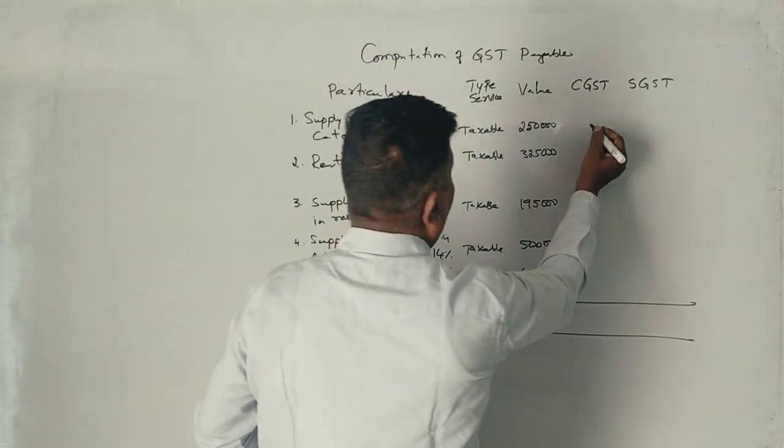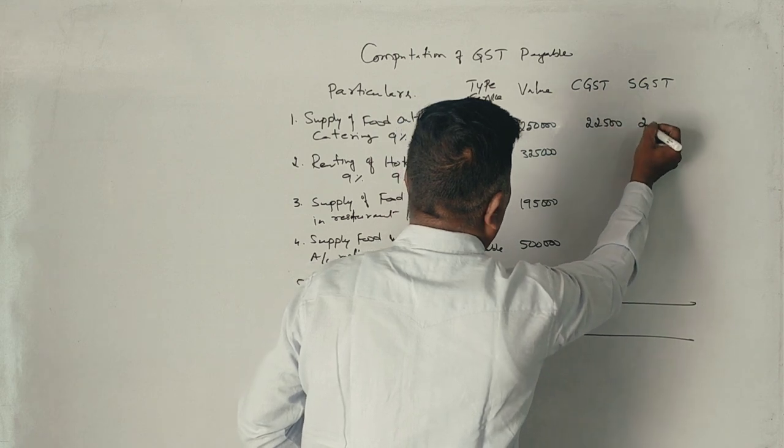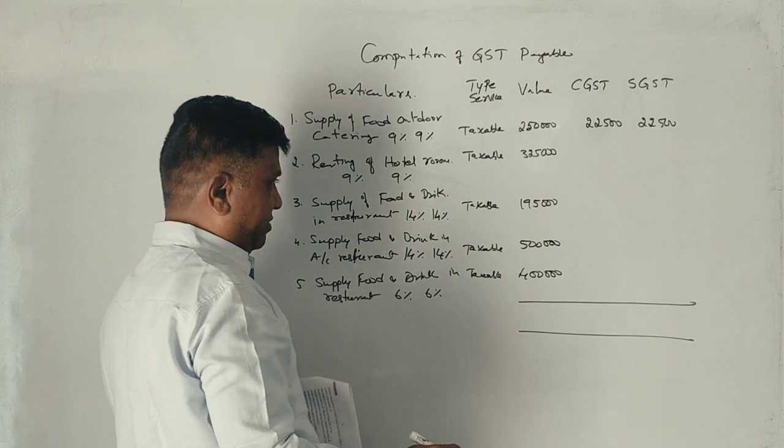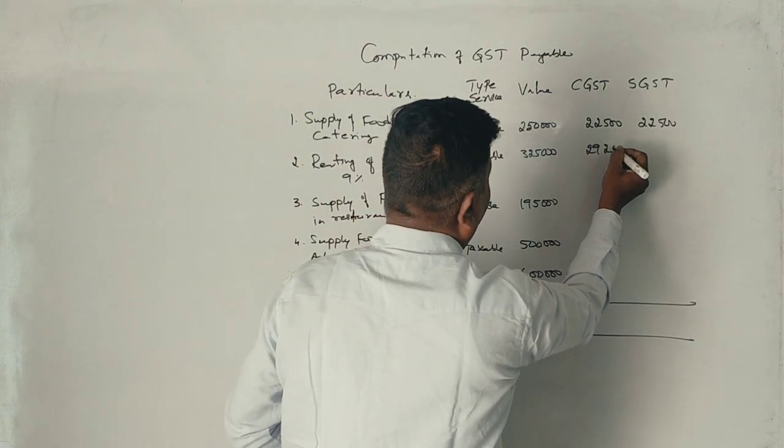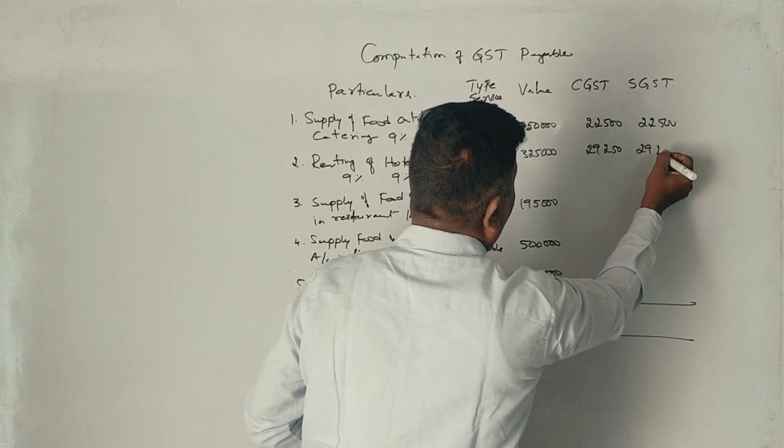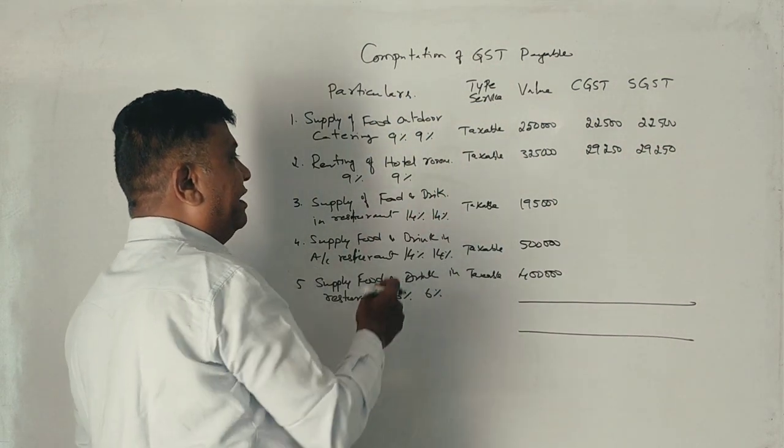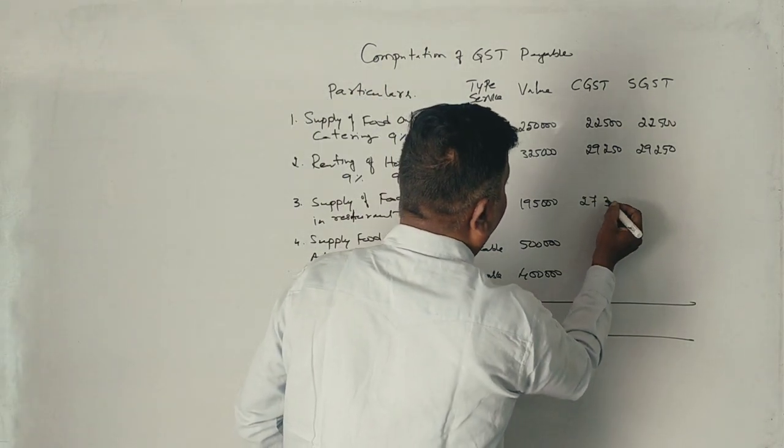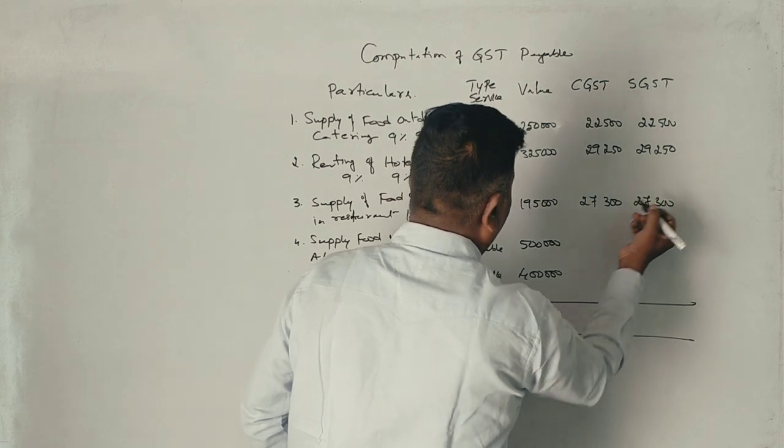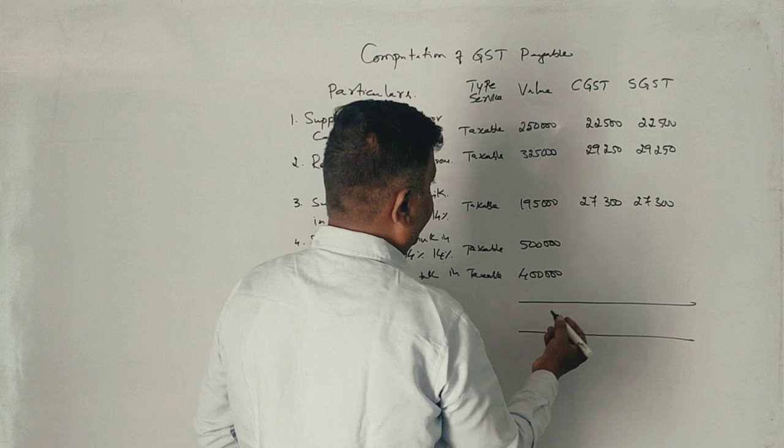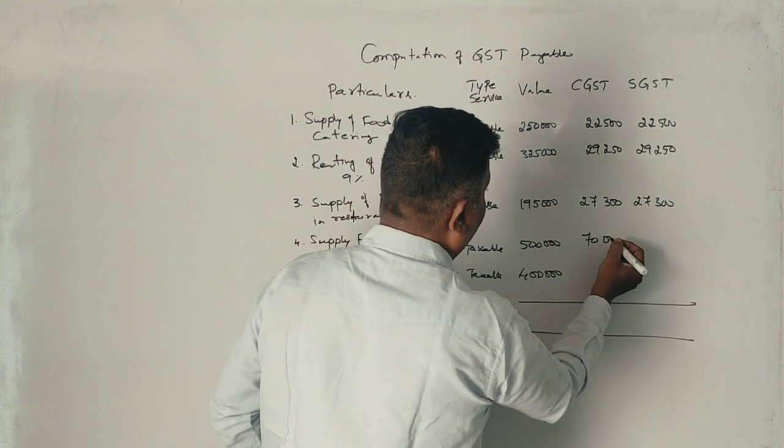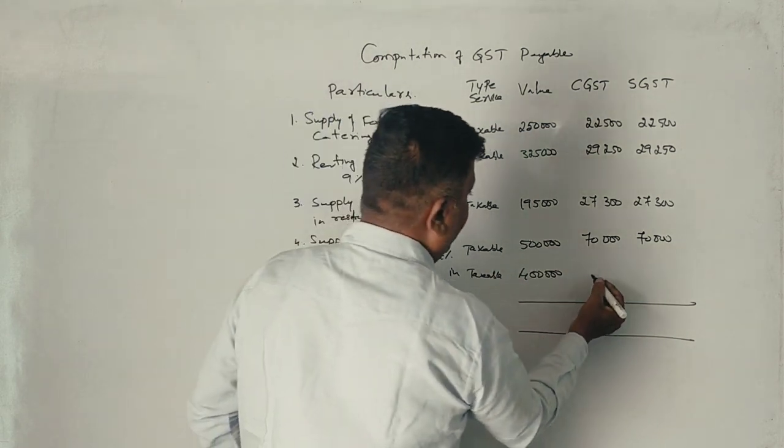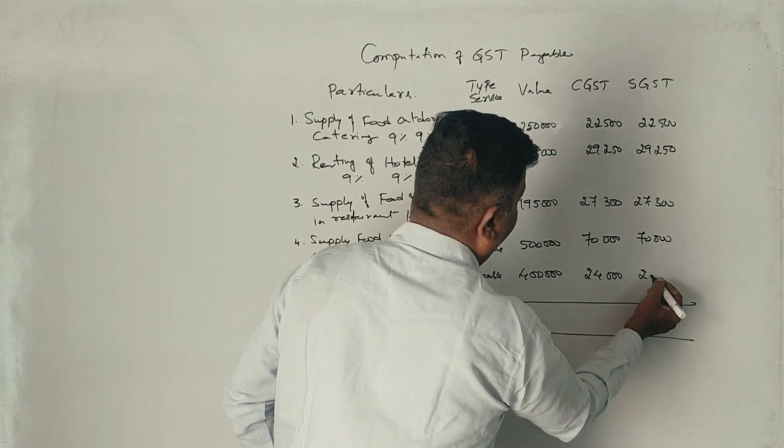9% on 2,50,000 is 22,500. Next, 3,25,000, 9% is 29,250, 29,250. 1,95,000, 14% is 27,300, 27,300. 5,00,000, 14% is 70,000, 70,000. 4,00,000, 6% is 24,000 and 24,000.